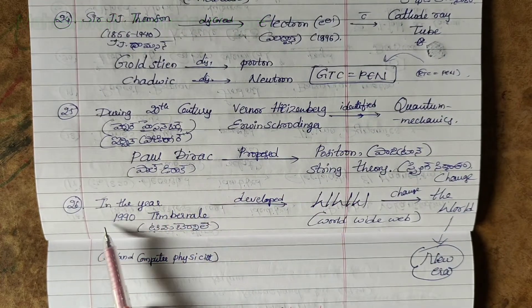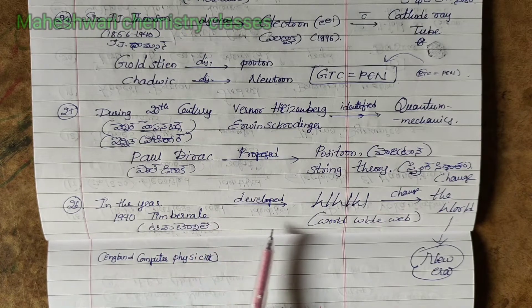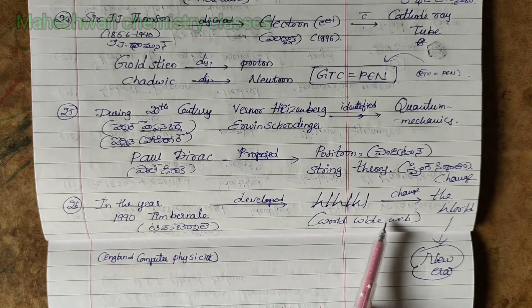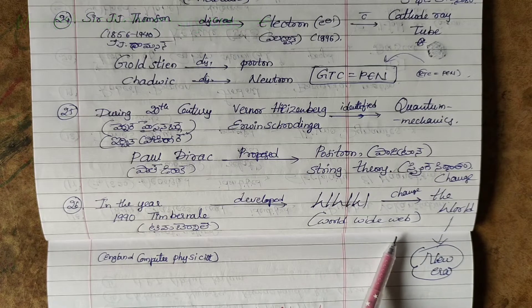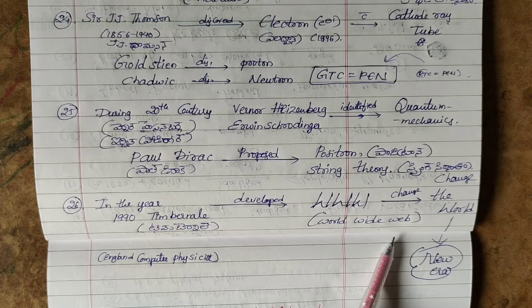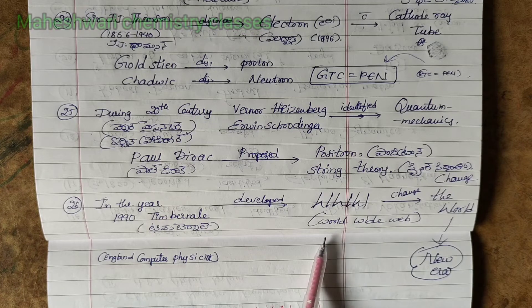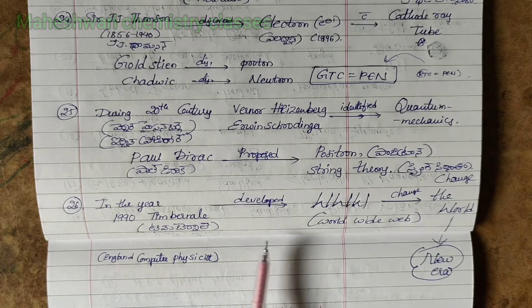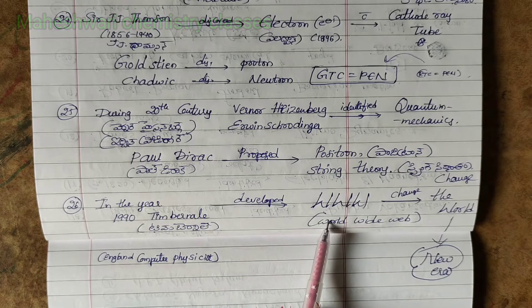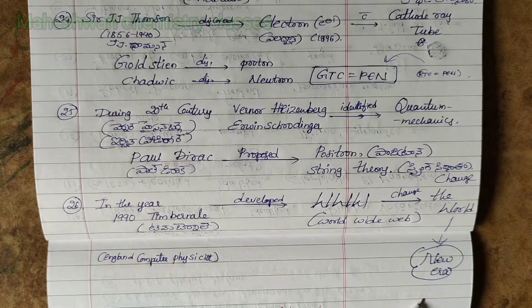26th point: In the year 1990, Tim Berners-Lee developed the World Wide Web (WWW). WWW changed the world, ushering in a new era.